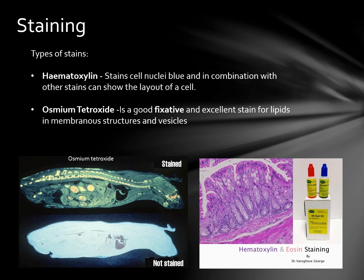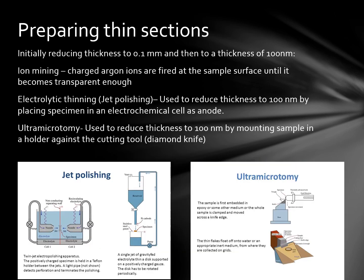Other stains include hematoxylin and osmium tetroxide. Hematoxylin stains cell nuclei blue and in combination with other stains can show the layout of a cell; it usually is paired with something like eosin. Osmium tetroxide is a good fixative and excellent stain for lipids in membranes, structures, and vesicles. Earlier we spoke of sectioning and preparing thin sections. The most popular method is the ultramicrotome.